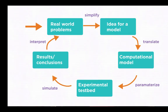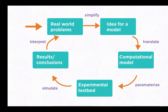We start by selecting a real-world problem or phenomenon we're interested in studying. Then we make a simplified version of the real world, producing an abstraction for a model. Next we go from the abstract idea to a computational model by representing the components and behaviors in terms of formal mathematics and algorithms. The next step is to translate those algorithms into computer code. These four steps are called computer modeling.